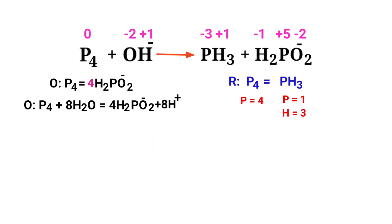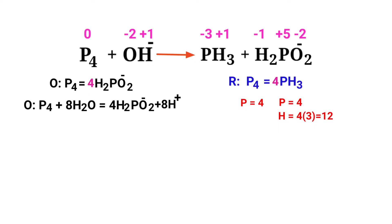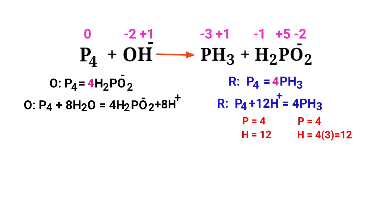In the reduction half reaction, to balance the phosphorus atoms, put a coefficient of four in front of PH₃. The phosphorus atoms are balanced. Then balance the hydrogen atoms by producing H⁺ ions. The number of atoms are now balanced in the reduction half reaction.